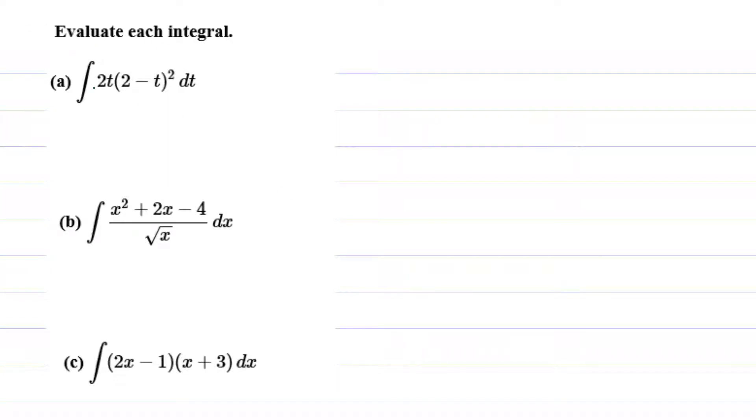Evaluate each integral. We are finding the most general antiderivative of this function, so we got 2t times (2 minus t) quantity squared.